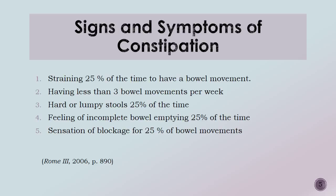Today's current standard of normal bowel movements dates back to 1909 by Sir Arthur Hurst, and is defined as having anywhere from three bowel movements a day to as little as one bowel movement every three days. Today, to diagnose constipation, the Rome 3 criteria is used. Physicians will diagnose the symptoms after two items have been met.